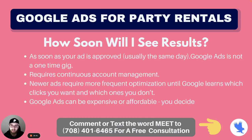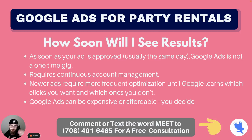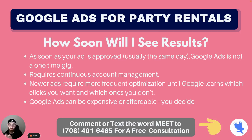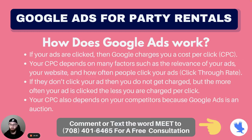How soon do you see results with Google Ads? As soon as your ad is approved — usually the same day — your ad goes up and you'll start seeing results. It's not a one-time thing though; it requires continuous management. Your competitors start seeing your ad and start bidding too, which drives up costs. Newer ads require more frequent optimization until Google gets to know you. The better you follow Google's guidelines, which I'll teach you today, the lower your cost per click.